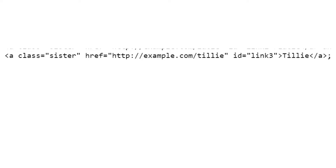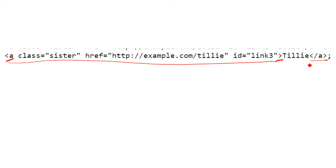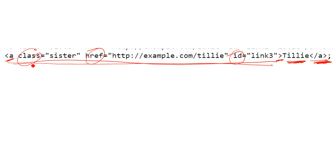Now you can first look for tag 'a' and then inside that look for href. Let me give you a quick visual overview. Here you can see the opening of a tag and the closing. Within the opening tag you have attributes, and between the opening and closing tags you have the string content, like 'tilly' in this example. Tags always come in pairs, as mentioned earlier.